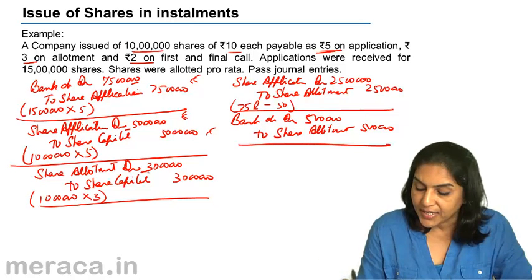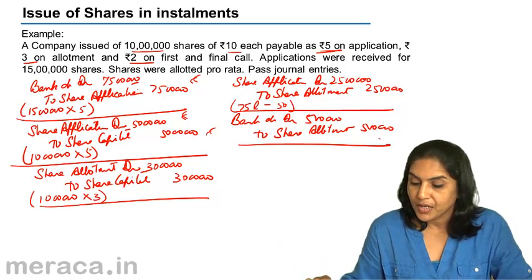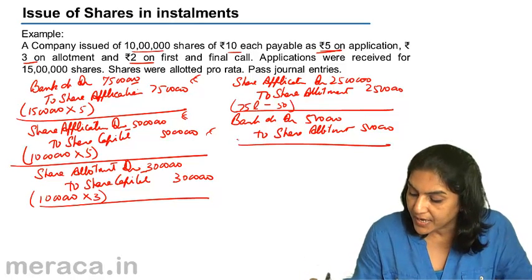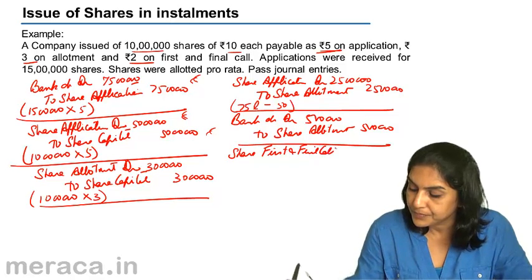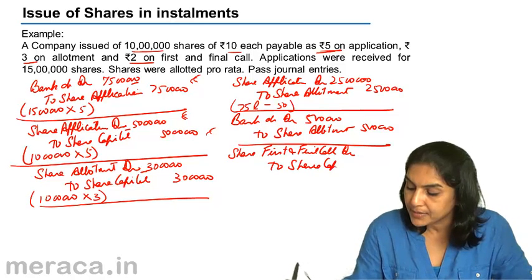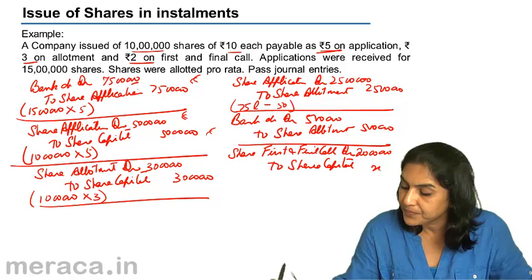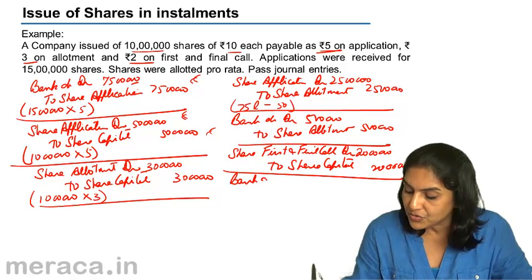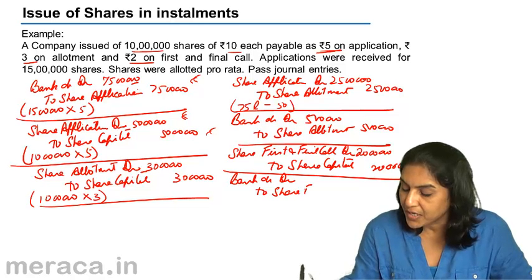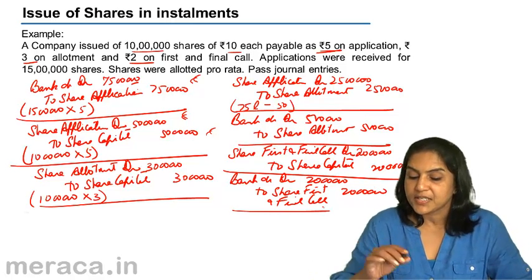Share allotment account: ₹30 lakhs debited, credited ₹25 lakhs and ₹5 lakhs — allotment account is also closed. When the final call money becomes due: share first and final call account debit to share capital — ₹2 into 10 lakh shares = ₹20 lakhs. There was no calls in advance, so the entire amount needs to be received. Assuming it is received: bank account debit to share first and final call account — ₹20 lakhs. This would be the scheme of entries.